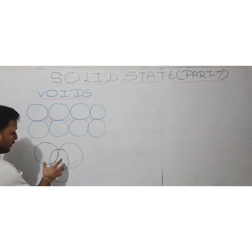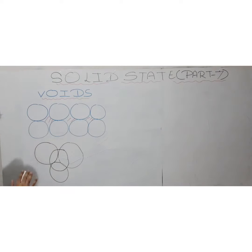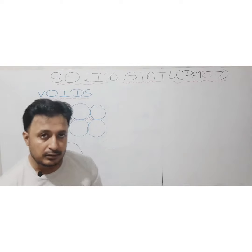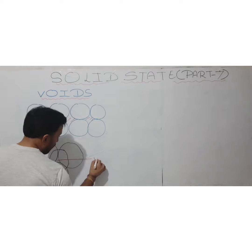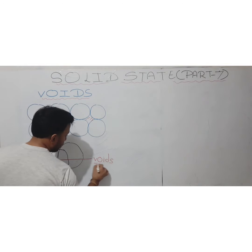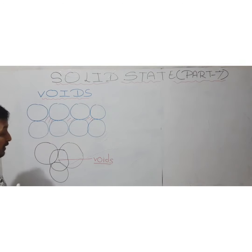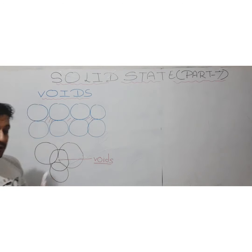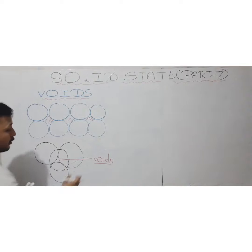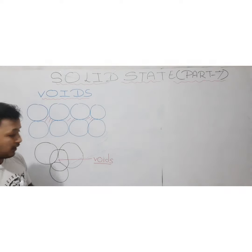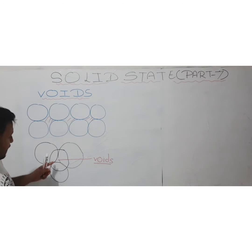These empty spaces which are covered by spherical particles in the crystalline lattice are known as voids. That is, the empty spaces present and covered by different sets of spherical particles in different types of packing in a crystal lattice are known as voids.